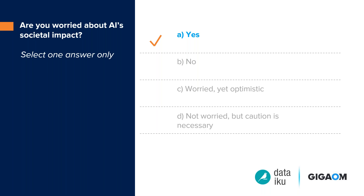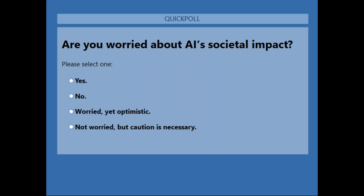The first poll question is: are you worried about AI's societal impact? You have four multiple choice answers. A hard yes or a hard no, or if you're worried but optimistic, that's the third option. If you're not really worried but there's some caveat or asterisk on that no, the fourth option is yours. There's no right or wrong answer — we just want to get a sense of how people are feeling about these issues.